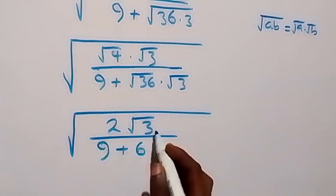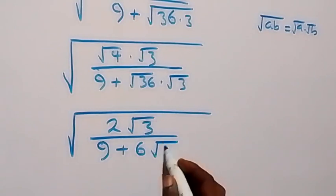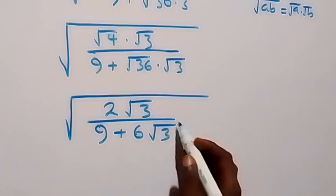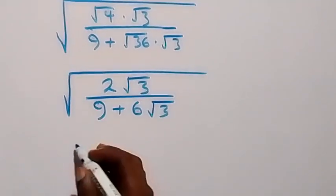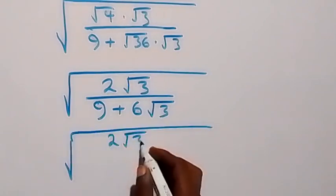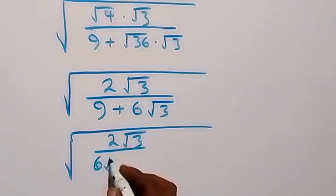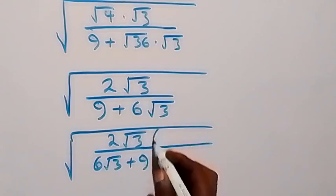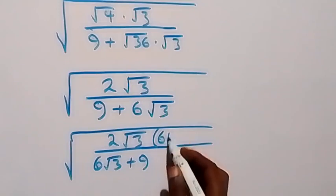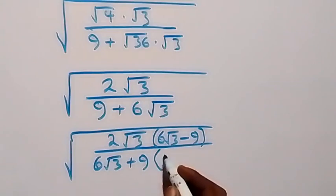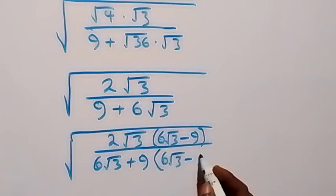Here we have 6 — that's root 36 — then also times root 3. From here we can multiply and divide by the conjugate, that is, we rationalize. This gives us square root of 2 root 3 over — here we can write this as 6 root 3 plus 9 — then multiply by 6 root 3 minus 9, and also multiply the denominator by 6 root 3 minus 9.